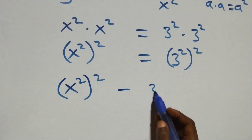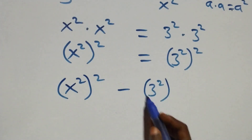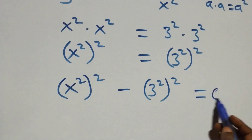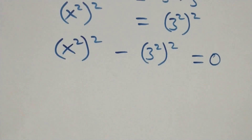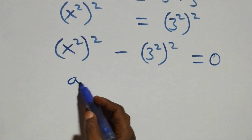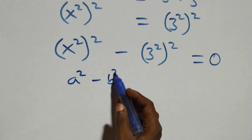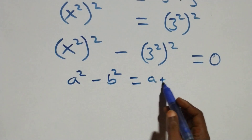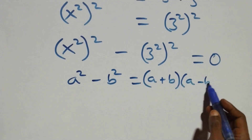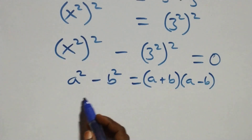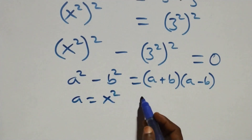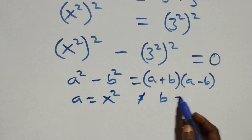So we have x⁴ minus 3⁴ equals zero. This follows from the difference of two squares: a squared minus b squared equals (a + b)(a - b). Here a stands as x squared and b stands as three squared.